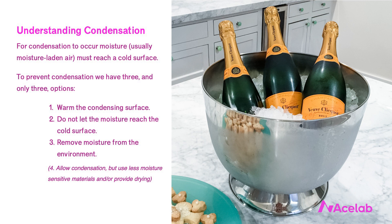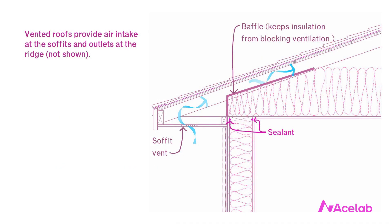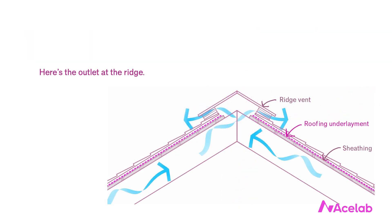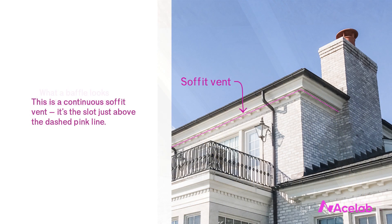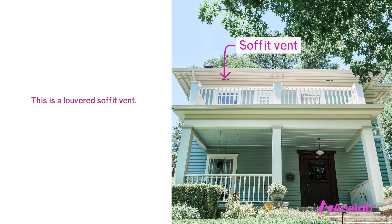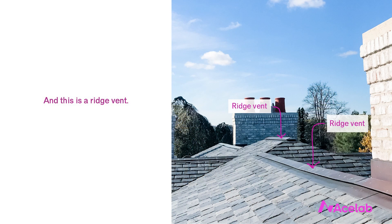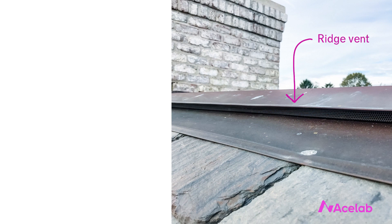Let's look at how this applies to vented roofs. A vented roof provides air intake at the soffits and outlets at the ridge. In this classic configuration, we use baffles to keep that vent space clear of insulation so air has a pathway from low to high. Here's what a baffle looks like in a real roof, and here's an example of a nice slot-style soffit vent, as opposed to the more common louvered soffit vents. Here are some images of a ridge vent. Let's talk more about the moisture management part, because a lot of people miss some of the nuance, which can have potentially significant consequences.